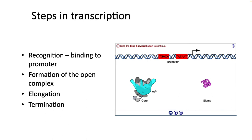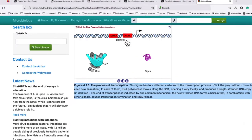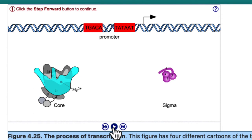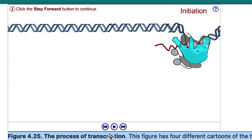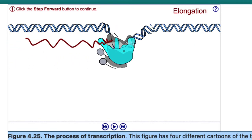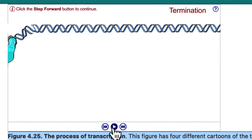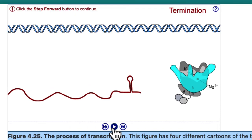There are several steps in transcription. First, recognition by the promoter, which involves the binding of the sigma factor. Then, the open complex is formed, where the DNA strands are separated. RNA polymerase then begins inserting bases into the DNA, trying each one randomly and inserting the correct one when it finds a match, and starts creating the transcript. Finally, transcription continues in the elongation phase until the polymerase reaches a terminator. Shown in this diagram is an animation of the process: initiation, where the sigma factor binds; elongation; and finally termination, showing a Rho-independent terminator.